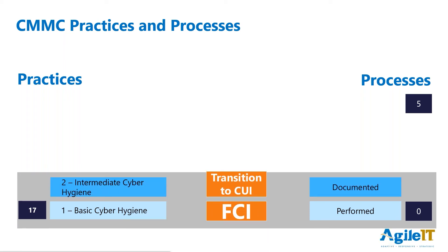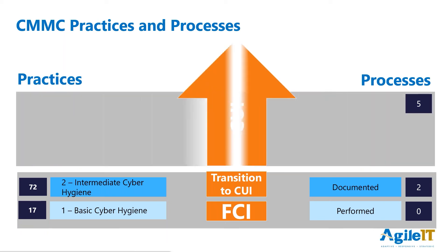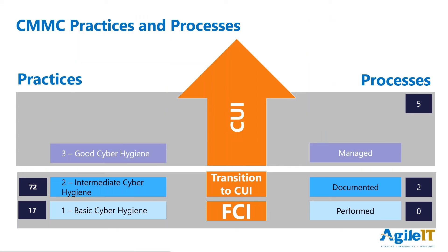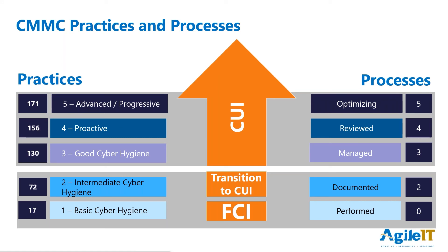Level 2 is a transition level and one I suspect will not be seen too much, as it is only in place as a transitory level. As the CMMC-AB says, it's to recognize the performance of contractors as they do the work to move to level 3. It jumps from 17 practices to 72 practices and has the first two processes in the maturity model. Levels 3 through 5 are required for managing controlled and classified information. Level 3 is the most common with around 50,000 contractors required, featuring 130 practices including all 110 from NIST 800-171. Levels 4 and 5 are reserved for the biggest and most targeted primes, with only a combined 144 total companies expected to be required to meet those two levels.